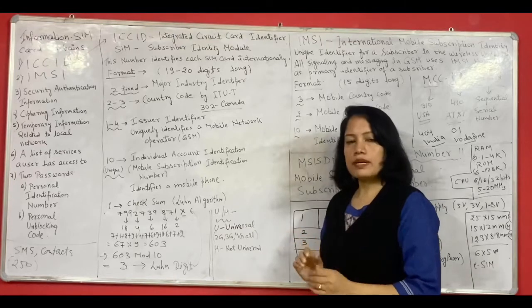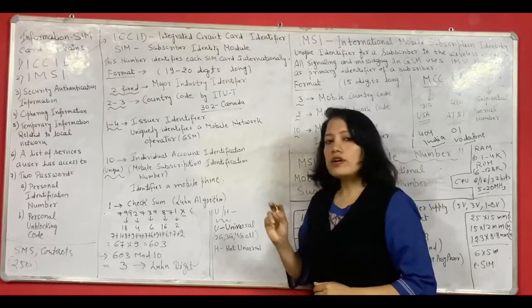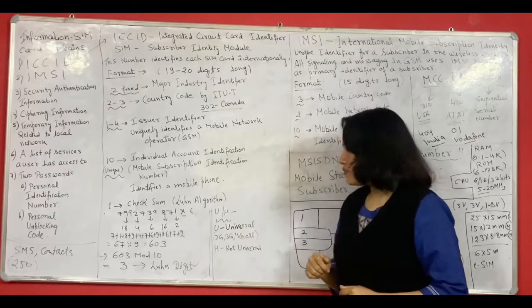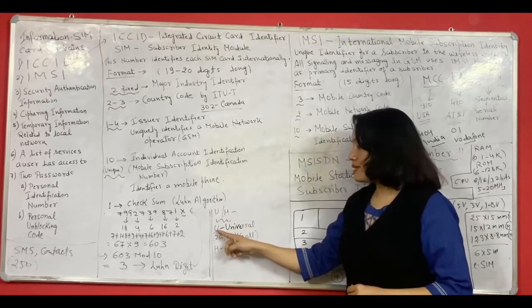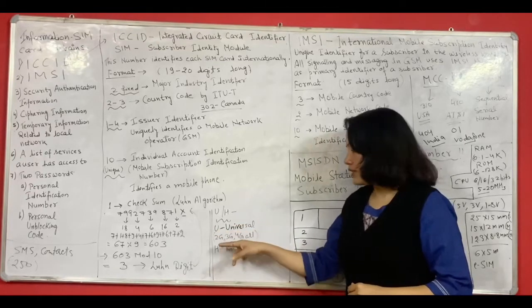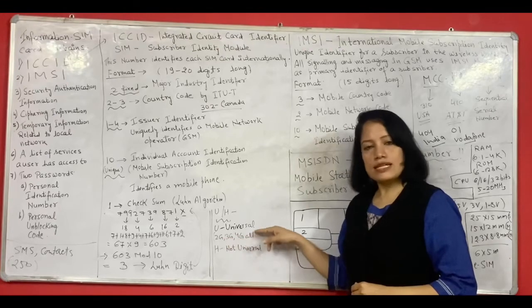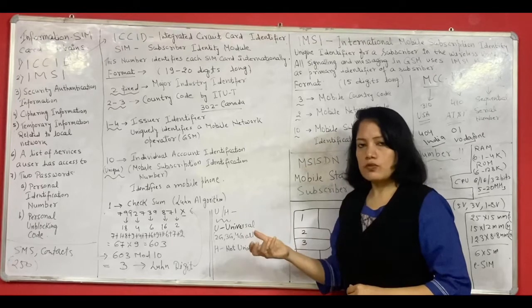Now at the end of the number you would find written either U or H. Now what are these for? So if U is written it means that your SIM is universal and it can work on all kinds of networks whether it is 2G, 3G, 4G etc. But if H is written it means that it will work only in a specific network.